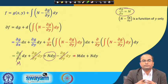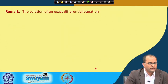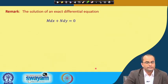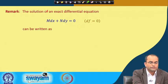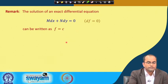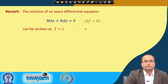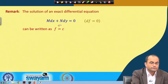If the equation is not exact, we need another method. As a remark: the solution of the exact differential equation M dx + N dy = 0 is obtained as follows. Since df = 0, the function f must be constant, so f = c is the solution.